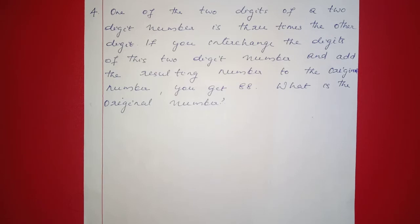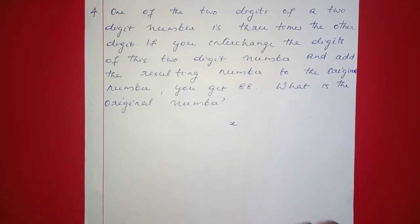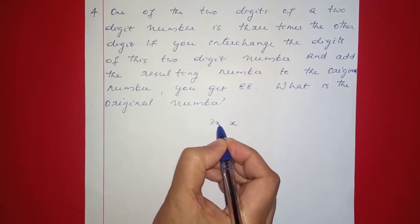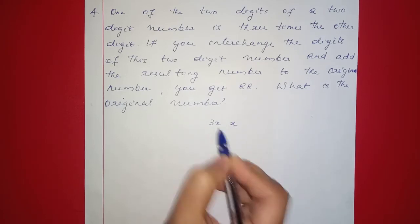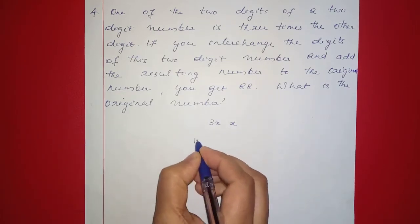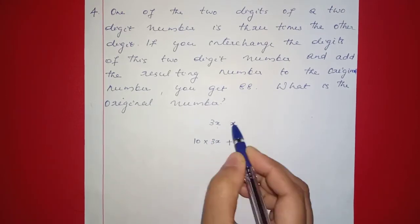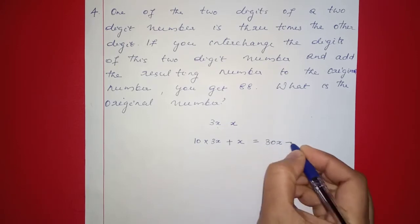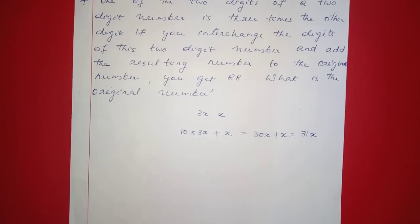For this two-digit number problem, let one digit be x. Since one digit is three times the other, the second digit is 3x. So the unit place is x and the tens place is 3x. The original number equals 10 into 3x plus x, which is 30x plus x, giving 31x. The interchanged number has unit place 3x and tens place x, giving 10x plus 3x, which equals 13x.